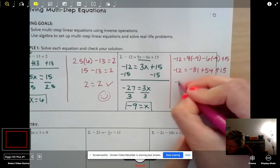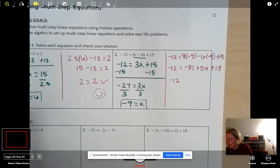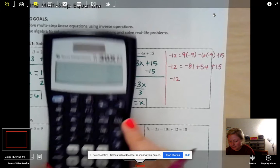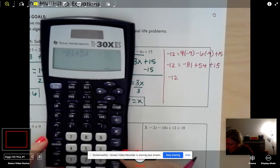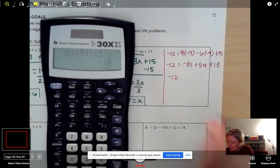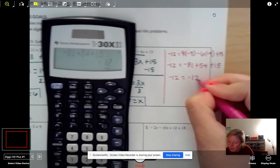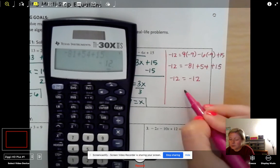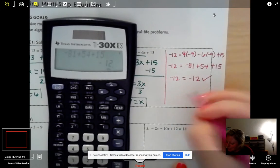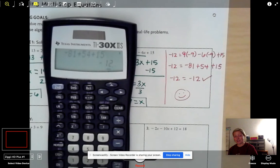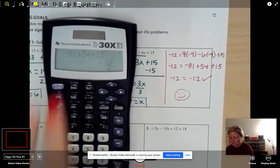Drop down your negative 12. And then I'm going to type the rest of this in my calculator. I have negative 81 plus 54 plus 15. And I get negative 12. Now, does negative 12 equal negative 12? Yes. Yes, it does. We are good to go. We did it right. Amazing. Just like you guys.